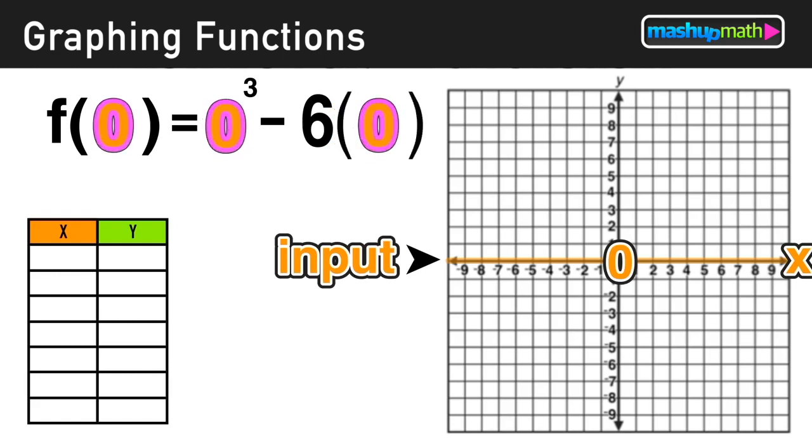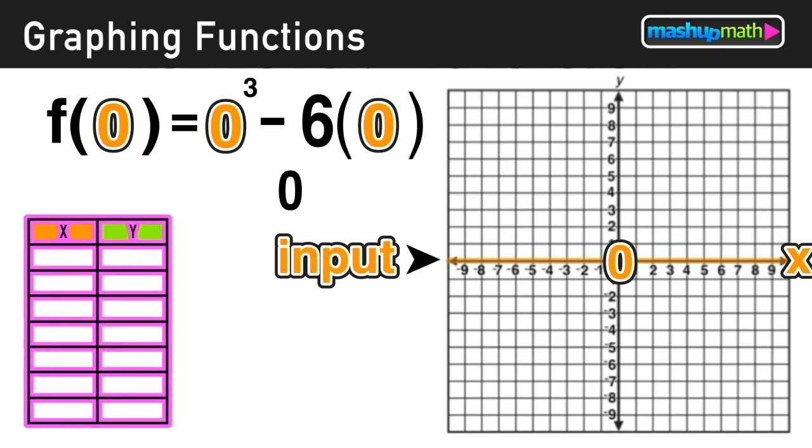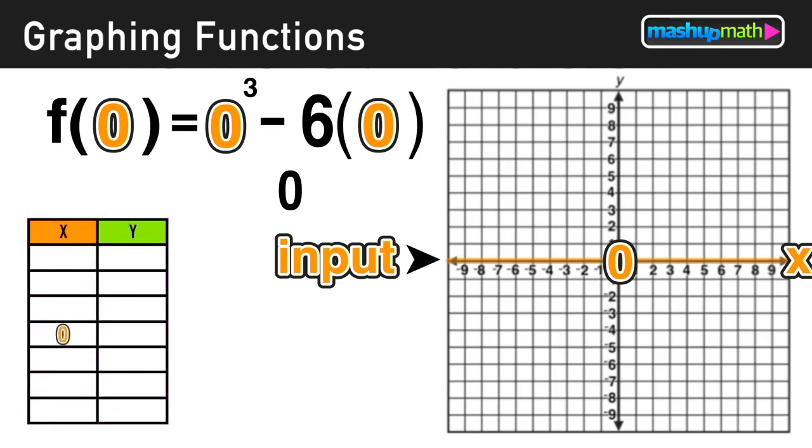So in this case, f(0) = 0³, which is just 0, minus 6 times 0, which is just 0, and 0 - 0 = 0. So for this function, when we input 0, our output is also 0, and we have our first point that we can include on our table.